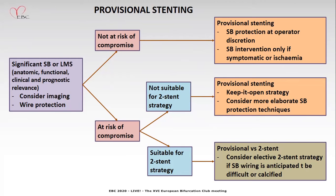If the compromise of the side branch is not at risk, provisional stenting is the best method with side branch protection at the operator's discretion. If side branch intervention is required — if there is ischemia or symptoms and the side branch is at risk of compromise but not suitable for two-stent technique — you can use the keep-it-open strategy, jailed balloon technique, or jailed microcatheter technique. If at risk and suitable for two-stent technique, consider elective two-stent strategy, particularly if side branch wiring is anticipated to be very difficult.